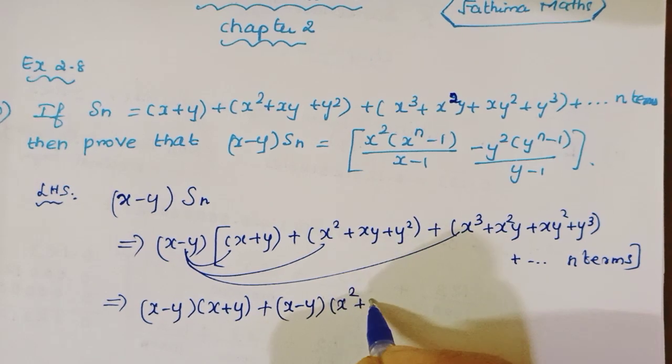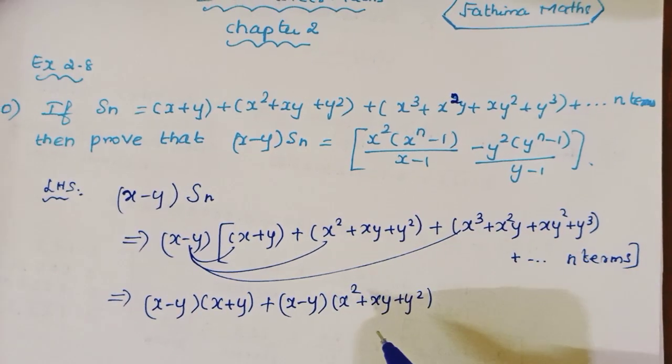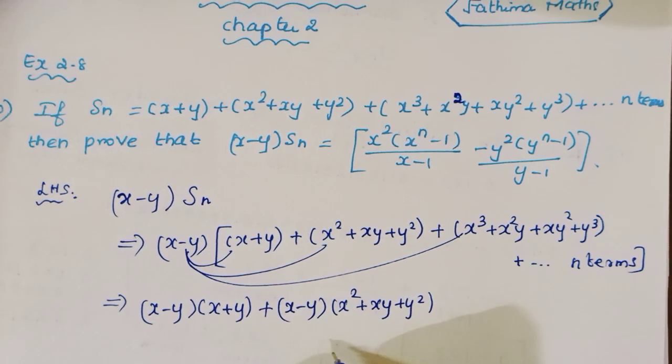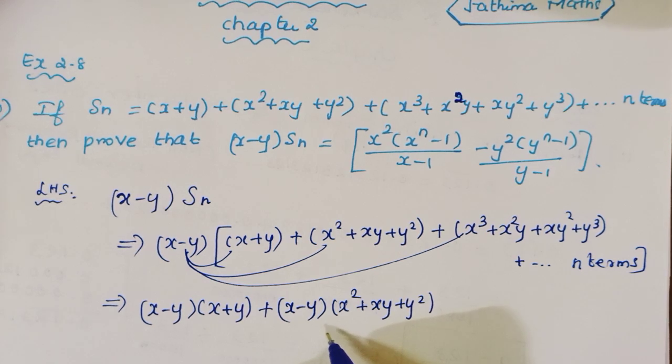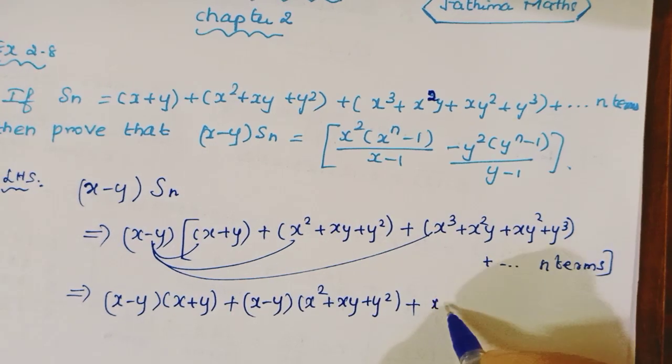Next (x-y) into (x²+xy+y²), that is (a-b) into (a²+ab+b²), which equals a³-b³.